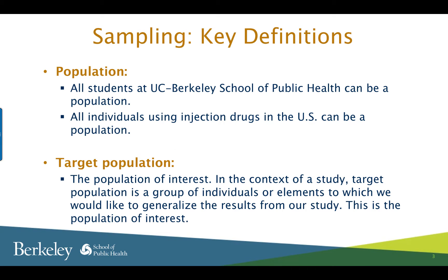Let us go over some key definitions. First, what's a population? All students at the UC Berkeley School of Public Health can be a population. All individuals injecting drugs in the U.S. is a population. All physicians practicing in the city of San Francisco can be a population. In the context of a study, target population is the group of individuals or elements to which we would like to generalize the results from a study. This is the population of interest, and we would like to assign a time to the population, such as the number of students at UC Berkeley School of Public Health in 2016.